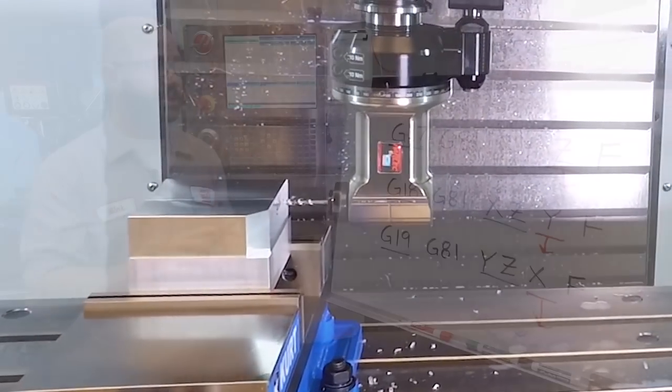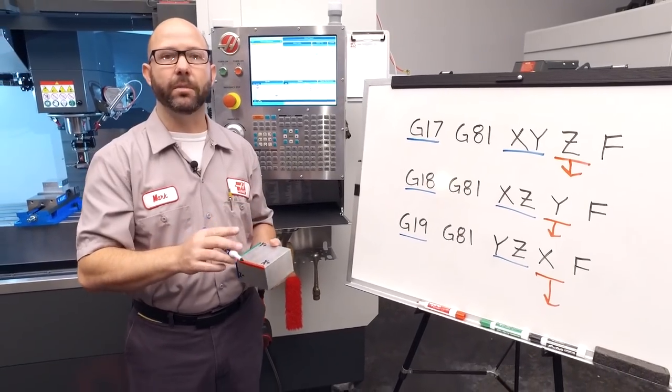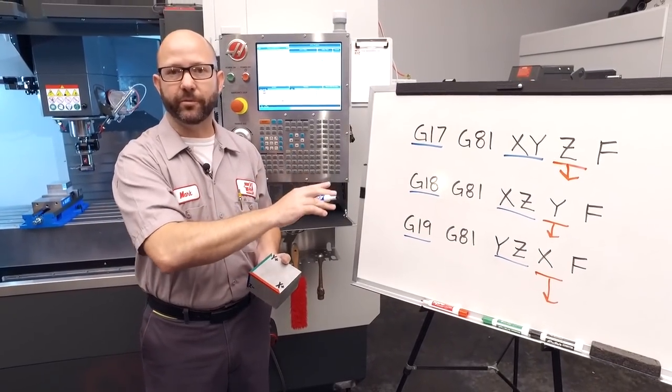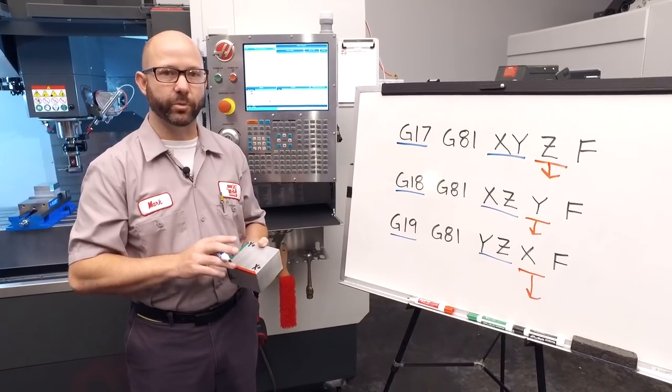Remember that G17, G18, and G19 plane selections are modal. So when we're done using them for a drilling cycle, we need to change things back to a G17 for the rest of our program.